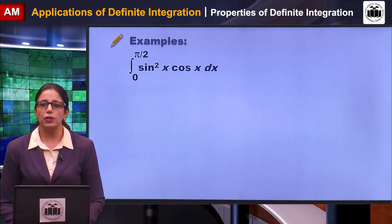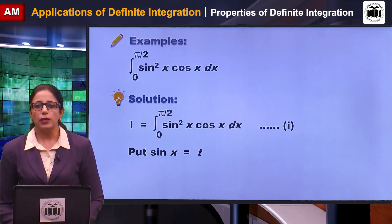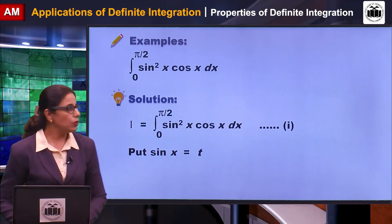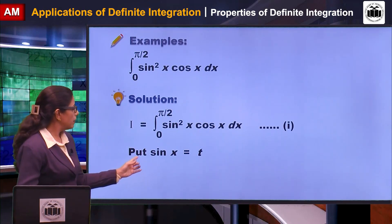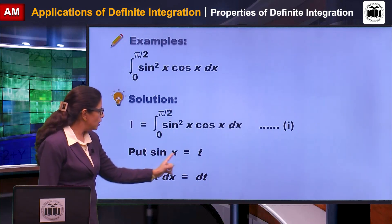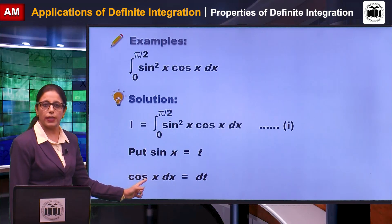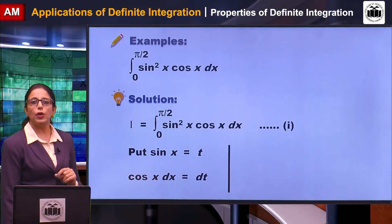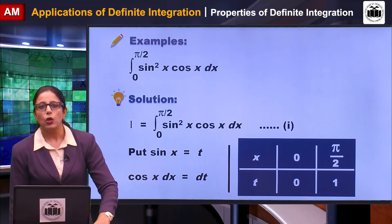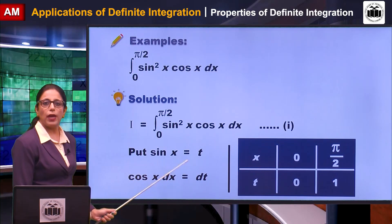Let us see what the substitution will be. Let I equal the integral from 0 to π/2 of sin²x·cos x dx. Here, sin x is going to be substituted as t. Whenever you take a substitution in the integral, you first differentiate whatever you have taken as the substitution. So when we differentiate t = sin x, we get dt = cos x dx.